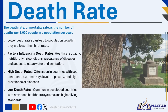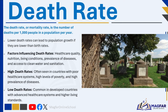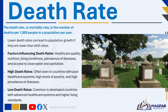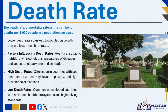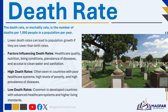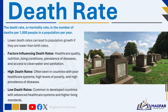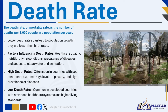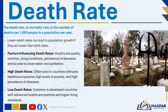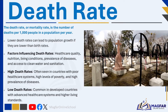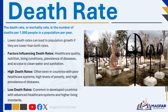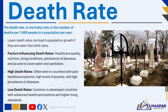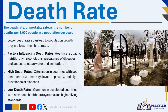The death rate, or mortality rate, is the number of deaths per 1,000 people in a population per year. A death rate of 9 means there are 9 deaths per 1,000 people per year. Lower death rates can lead to population growth. Factors influencing death rates include health care quality, nutrition, living conditions, prevalence of diseases, and access to clean water and sanitation. High death rates are often seen in countries with poor health care systems and high prevalence of diseases, while low death rates are common in developed countries with advanced health care and higher living standards.